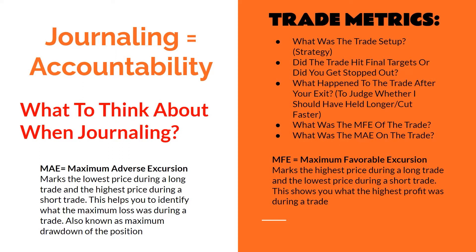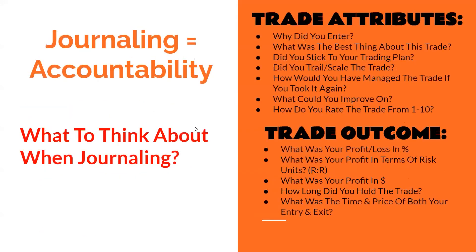There's also the MFE and MAE. The MFE — Maximum Favorable Excursion — marks the highest price during a long trade and the lowest price during a short trade, showing you what the highest profit was during the trade. The MAE — Maximum Adverse Excursion — marks the lowest price during a long and highest during a short, helping you identify the maximum loss, or maximum drawdown, of the position.